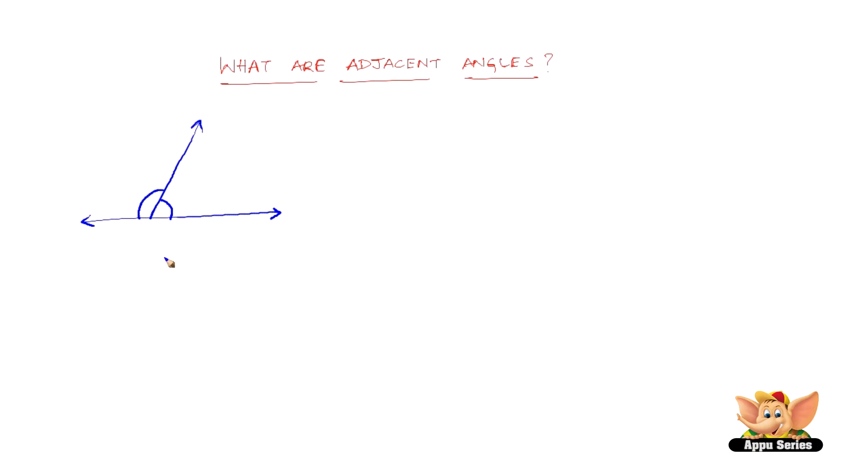Say one here and one here. So these are the two angles. Now in simple words, the angles that lie next to each other are called adjacent angles.